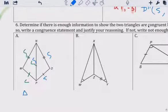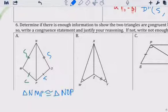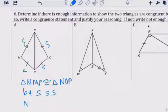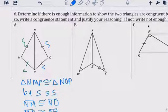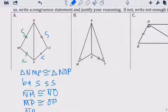Triangle N, M, P is congruent to triangle N, O, P. Line set. By side, side, side. By side, side, side. N, M is congruent to N, O, where M, P is congruent to O, P. Line segment. Line segment. And then line segment N, P is congruent to line segment N, P.